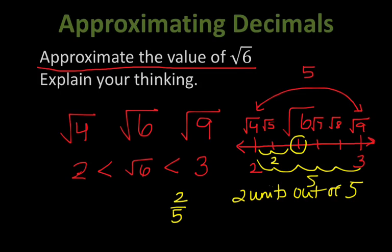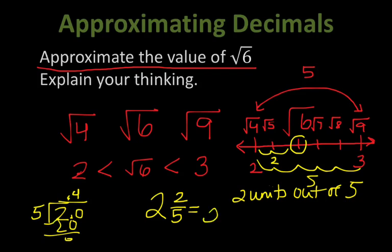So it's somewhere between 2 and 3, and I can approximate it as 2 and 2 fifths. We want a decimal, so 2 divided by 5 gives me 0.4, meaning square root of 6 is approximately 2 and 4 tenths, or 2.4. If you pull out a calculator and take the square root of 6, you get 2.4 rounded to the tenths place, or 2.45 to the hundredths — so this method gets us really, really close.